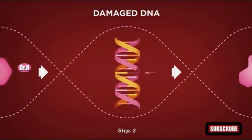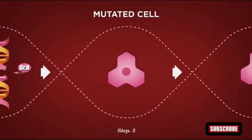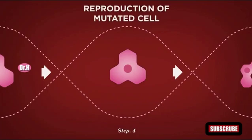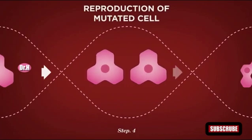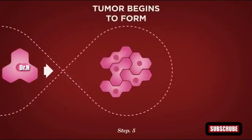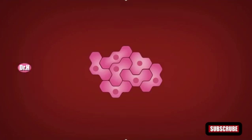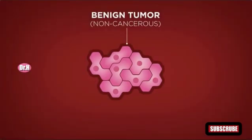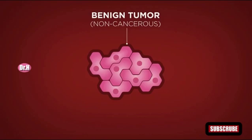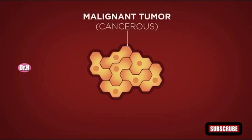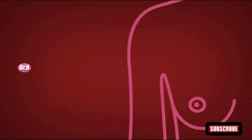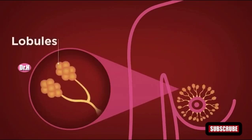When cell DNA — the cell's wiring — is damaged, new cells begin to rapidly reproduce without following the pre-wired plan. Aggressive cell growth can form a tumor or mass of tissue where each individual cell does not function as originally intended. These abnormal cells or group of cells can progress into the disease known as cancer.